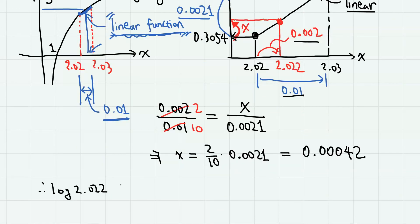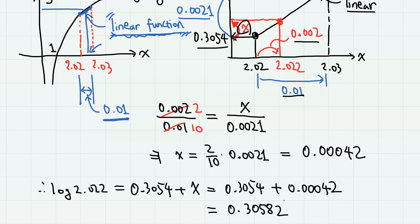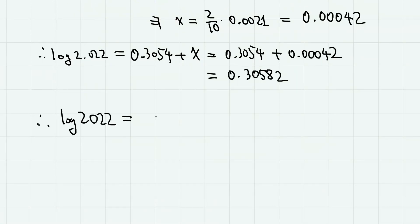Therefore, log 2.022 is 0.3054 plus x, which is 0.00042, giving us 0.30582. So log 2022 is 3 plus 0.30582.